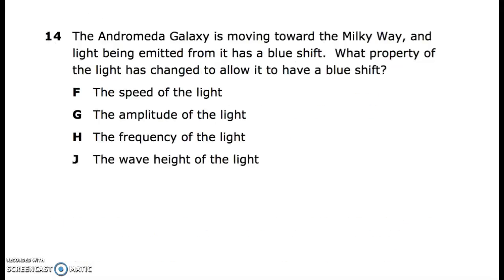Number 14. The Andromeda galaxy is moving toward the Milky Way, and light being emitted from it has a blue shift. What property of the light has changed to allow it to have a blue shift? F. the speed of light, G. the amplitude of the light, H. the frequency of the light, J. the wave height of the light.